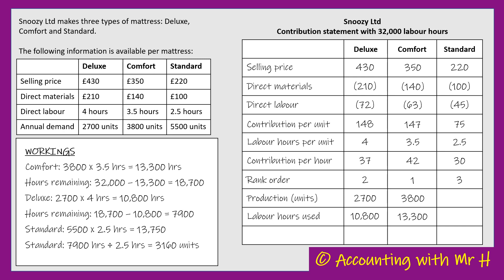If that came up as a decimal I would need to round it down because physically I don't have any more labour hours than what was set in the question. So the production in units of the Standard is 3,160 mattresses, and that uses up the remaining 7,900 hours.